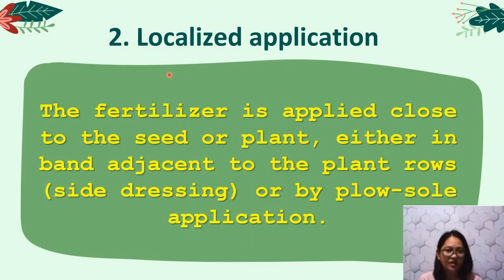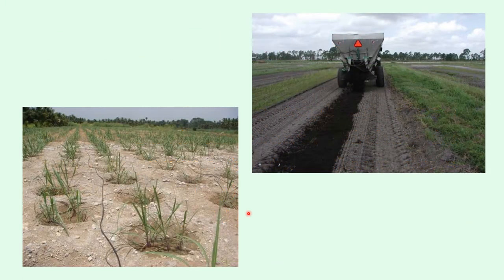Number two, we have localized application. The fertilizer is applied close to the seed or plant, either in a band adjacent to the plant rows — what we call side dressing — or by close soil application. This illustrates the localized application. It is essential for high-rate applications of high-analysis fertilizers.